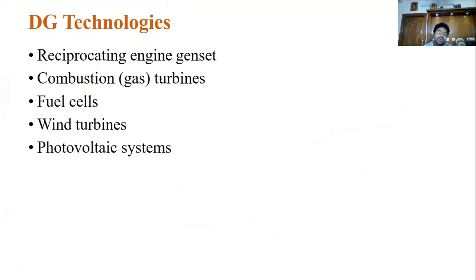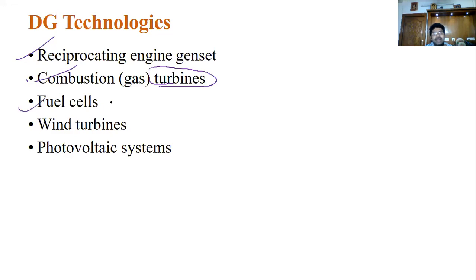Now, what are the different technologies and types of DGs? These include gas turbine plants, fuel cells, battery-operated solar plants, and wind turbines — wall type systems. In the next class, we will discuss these different technologies and types of DGs in detail. Thank you for joining us.